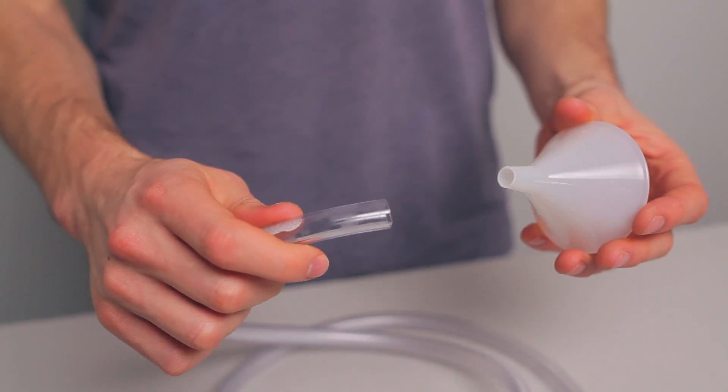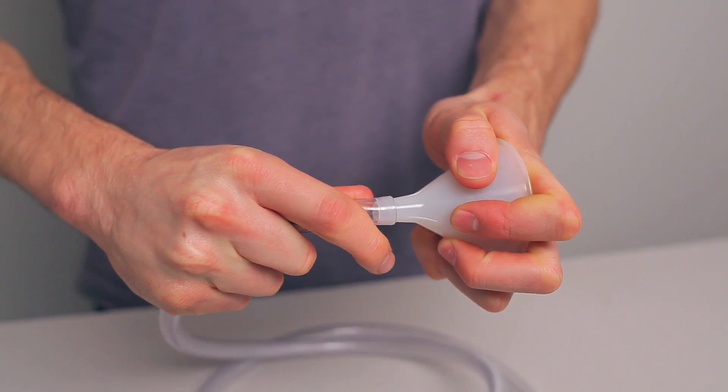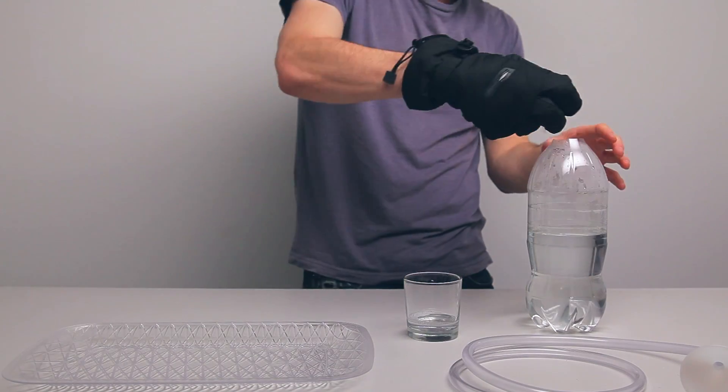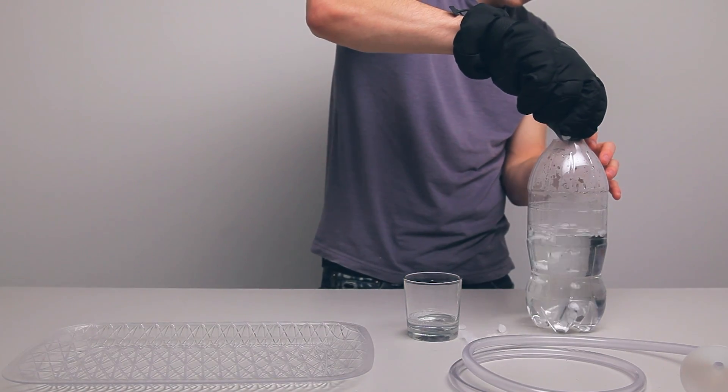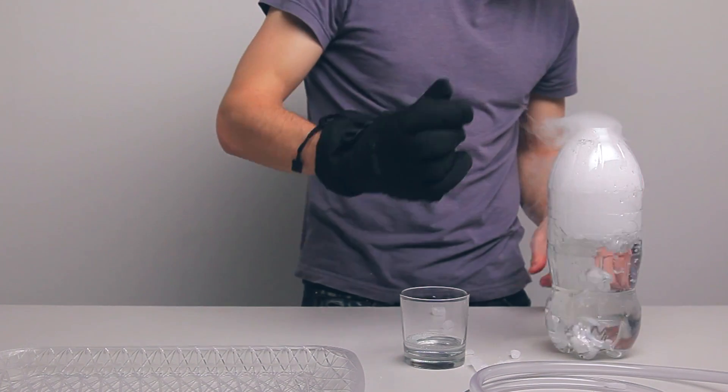Next, you want to take your funnel and stick it in the end of your tubing. Using your glove, take a few pieces of dry ice and put them in your 2-liter bottle. We chopped off the top of our bottle to make this a little bit easier.